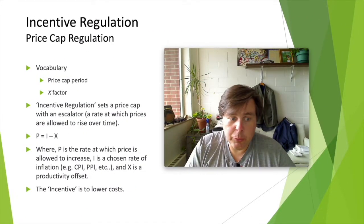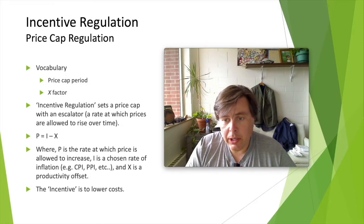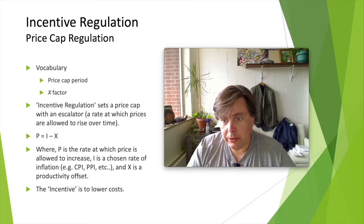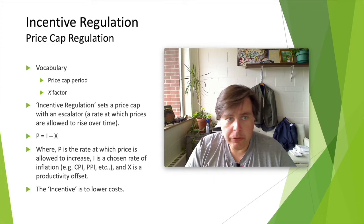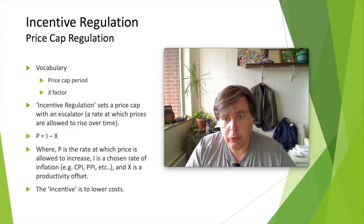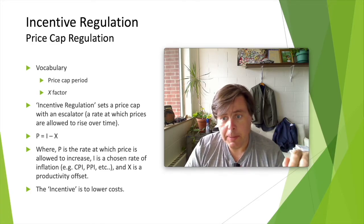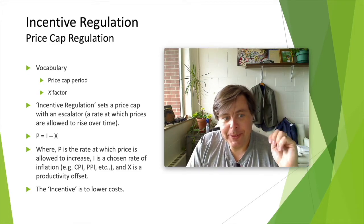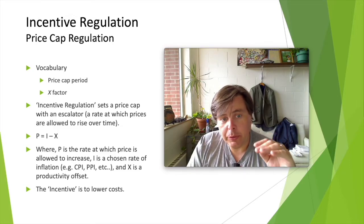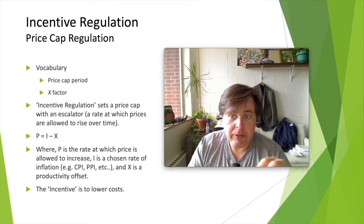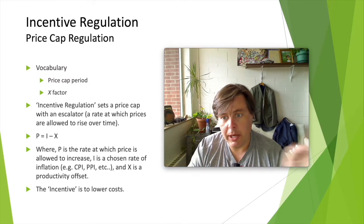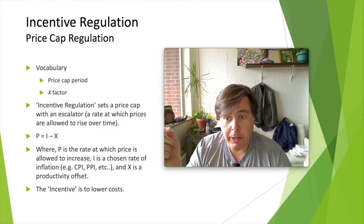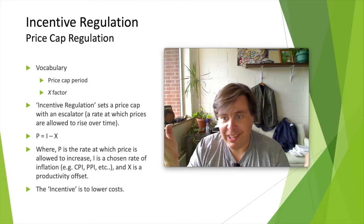Moving on to incentive regulation — where the incentive is the incentive to lower costs. We just saw how with rate of return regulation there can be an incentive for firms to overcapitalize and pass those capitalization costs on to consumers in the form of higher prices. In addition to the regulatory and judicial processes described, we can also employ price caps — locking in prices for a period of time. As economists, we know there are often issues with locking in prices. We also want to include various escalators, that is the rate at which we allow the price to increase — it could be CPI, PPI, or whatever everybody agrees upon. In practice, people tend to like CPI because everybody knows it, even when it's not necessarily appropriate.